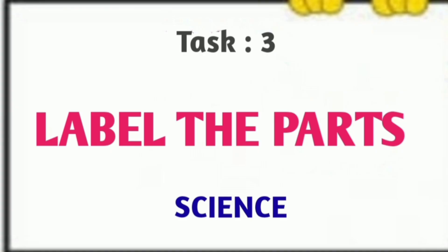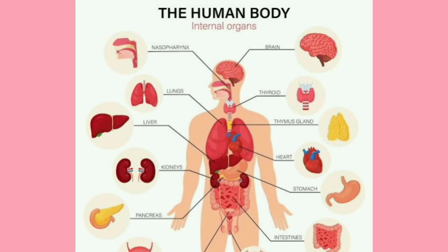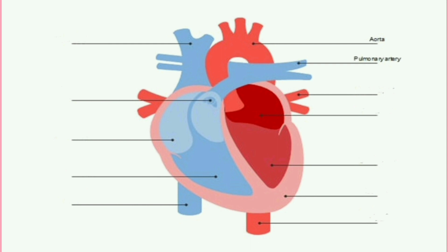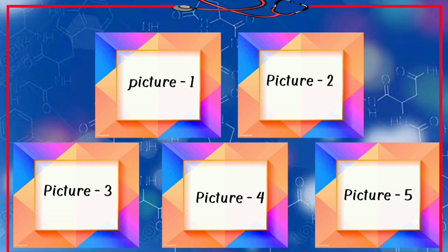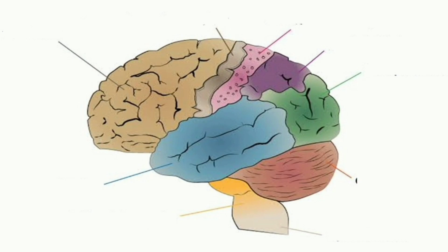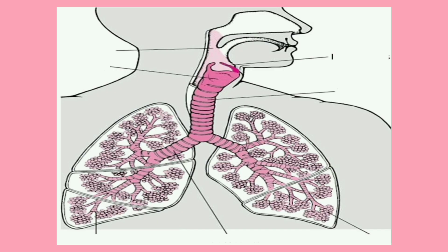Hi children, we welcome you to the activity of identifying the parts of the human system. You have to label the parts of the human organs. You will find 5 pictures of the human anatomy and the space to label them with the scientific and biological terms.